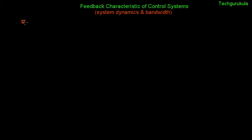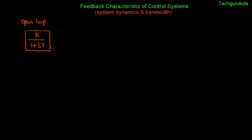To start with, let me take an open loop system whose transfer function is given by k over (1 + sT), where k is the zero frequency gain and T is the time constant. Let me take r as input and c as output. So this is the transfer function.